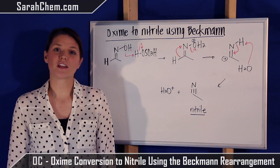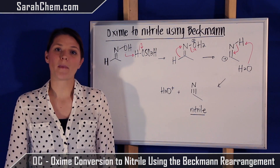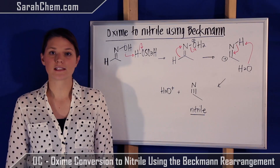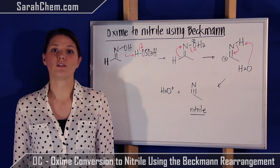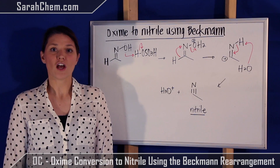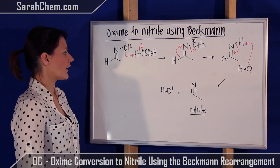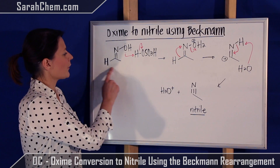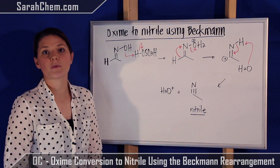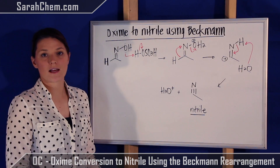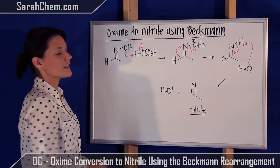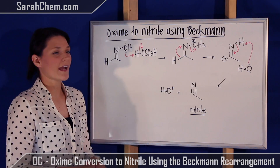This is a video tutorial on the mechanism for the conversion of an oxime to a nitrile using the Beckmann rearrangement. We're going to start out with an oxime, which would have been derived from an aldehyde, and we've got an acid catalyst.